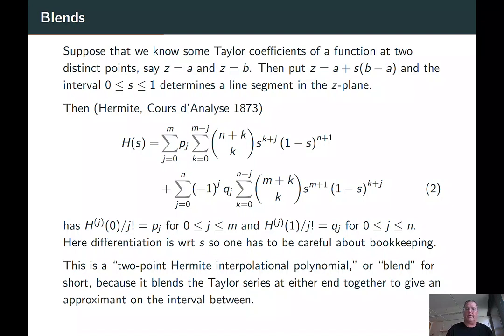And it's absolutely simple, straightforward. You have this two-line formula that gives you everything that you want to know. I call it a blend because two-point Hermite interpolational polynomial is a little too hard to say, and it blends the Taylor series at either end together to give an approximation on the interval between, and it's a better approximation than either Taylor series alone, of course.